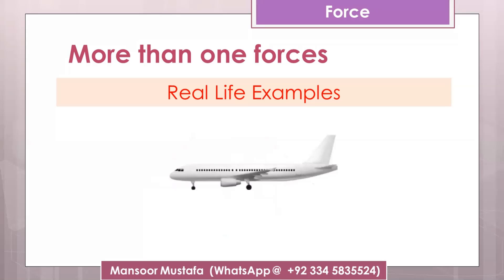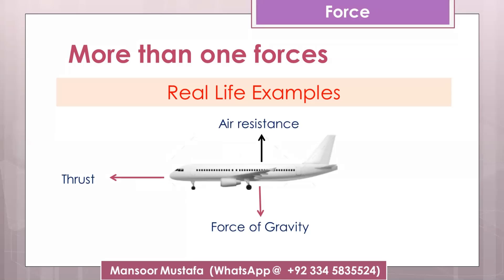Now consider one more example: there is an aeroplane which is flying in the air. Let's see how many forces are acting on it. First of all, definitely there will be a force of gravity. There will also be air resistance. Apart from these two forces, there must be another force which can drive this plane and move it in the forward direction. That force is called thrust - the force generated by the engine of the aeroplane which moves it in the forward direction.